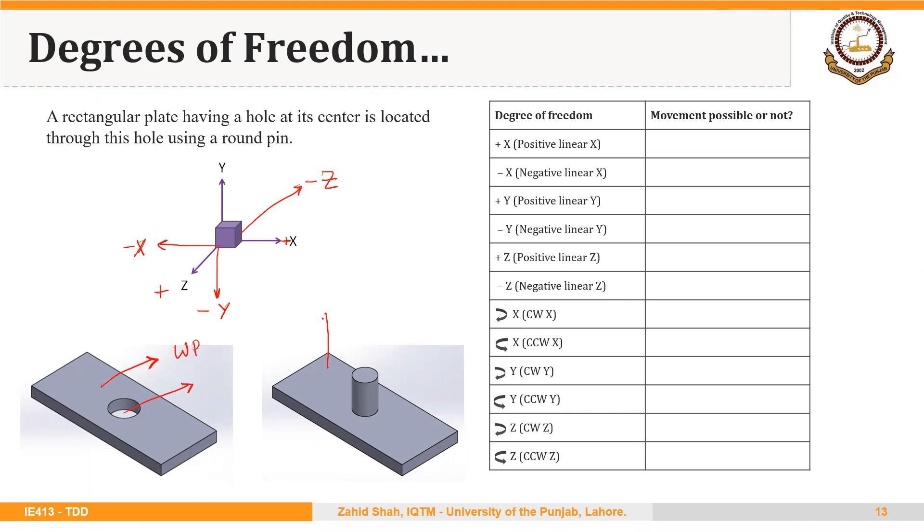On the right side, we have the jig or fixture plate or base, and it has a pin inserted at its center. That is basically the locating pin. In the previous example, the three-to-one principle,